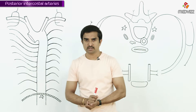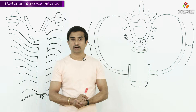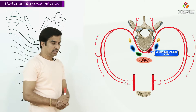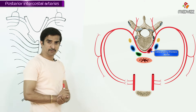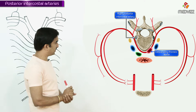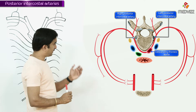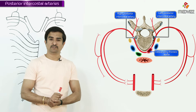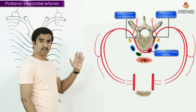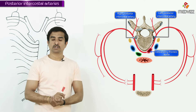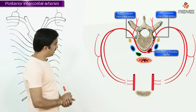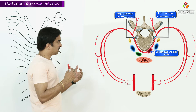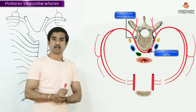Now let us discuss about the course and relations of these posterior intercostal arteries. As you can see in this picture, the descending thoracic aorta gives off two posterior intercostal arteries — right and left — on either side. The right posterior intercostal arteries are longer compared to the left ones because the descending thoracic aorta lies to the left and anterior to the vertebral column.